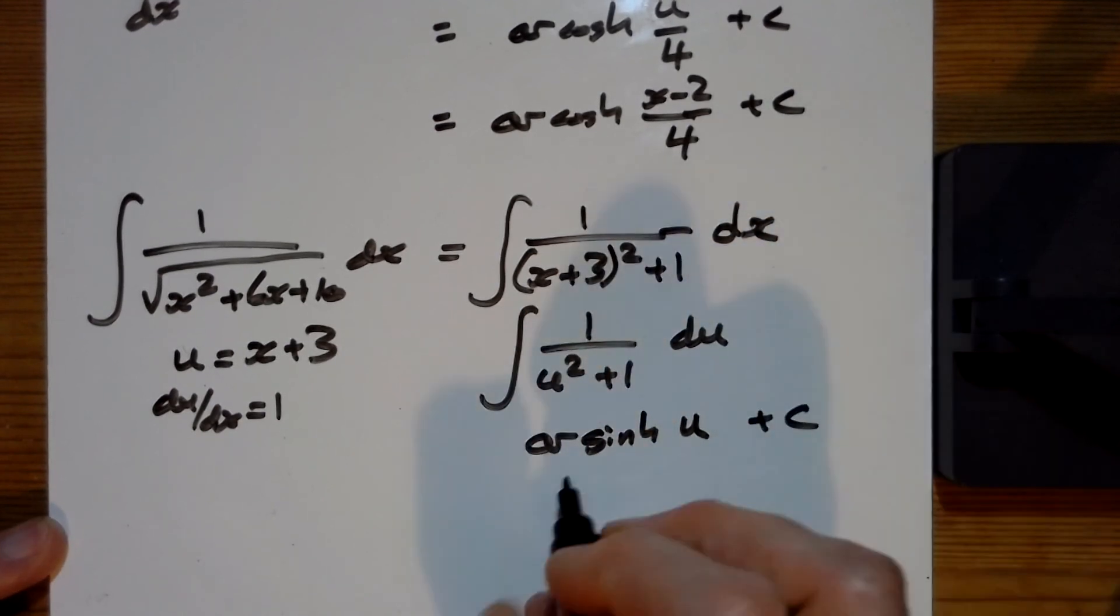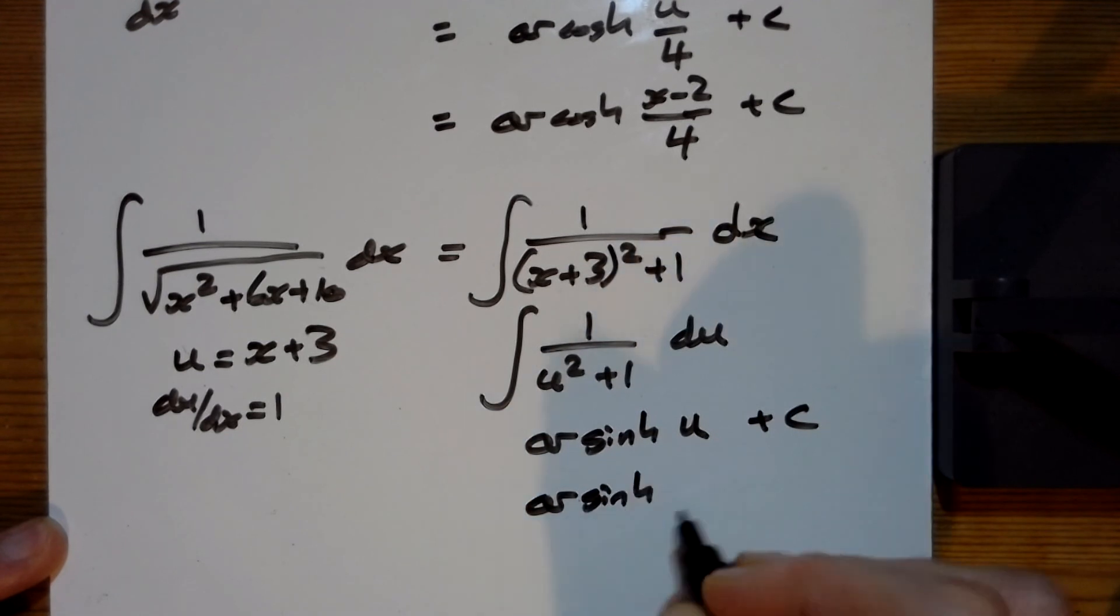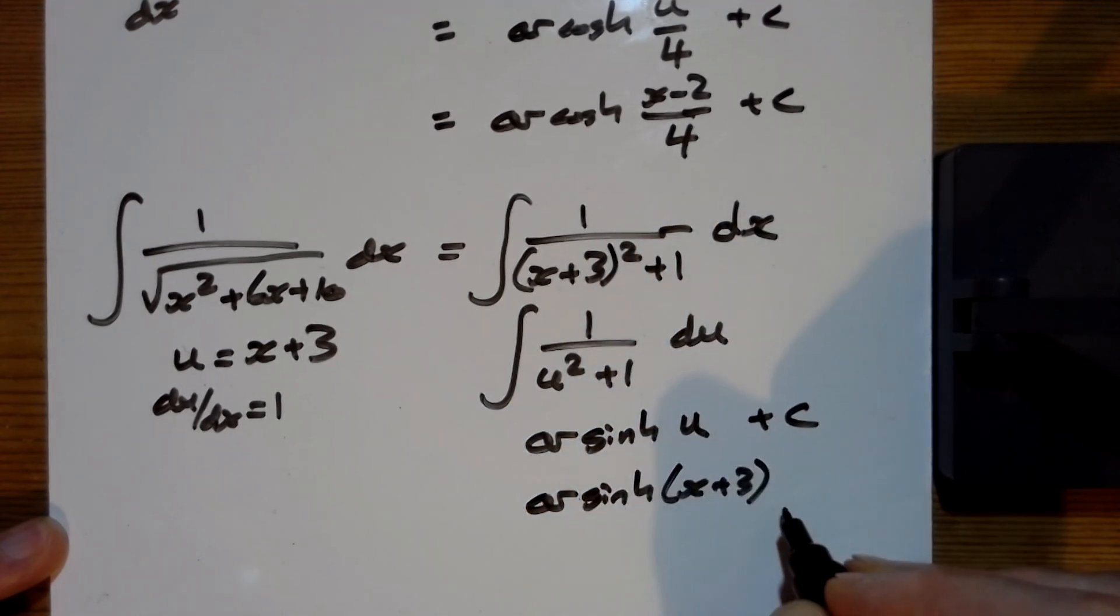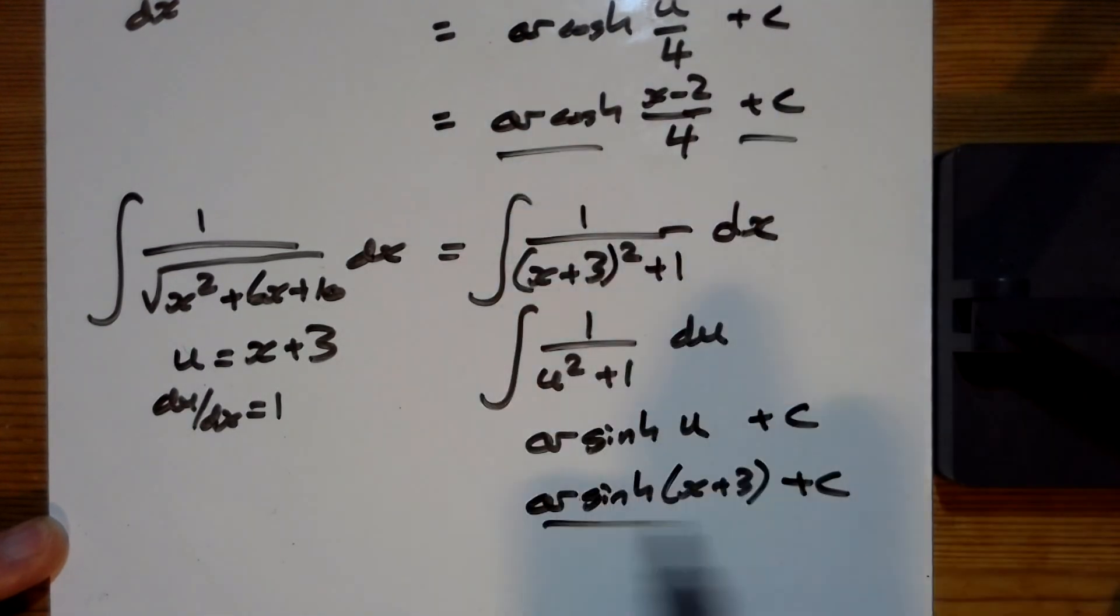Put the u back in so we've got the arsinh of x plus 3 plus c. So there's our answers for a and b.